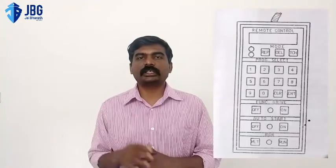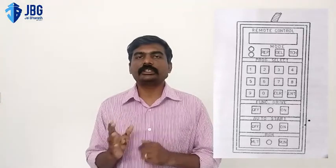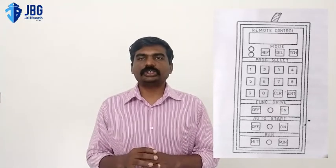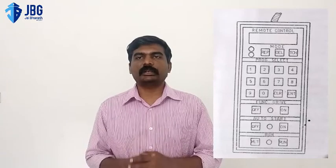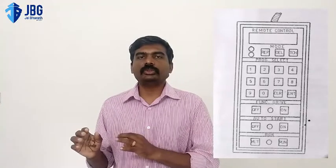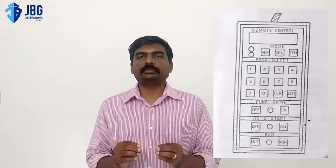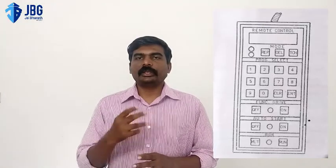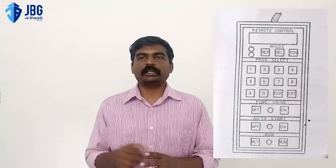In the teach-in method, the human operator moves the robot through a series of points by means of a manual teach pendant or teach box. You can see the diagram of a teach box here. The switches on the box are depressed by the operator in a certain order so that the end effector is moved to each desired point in the series.